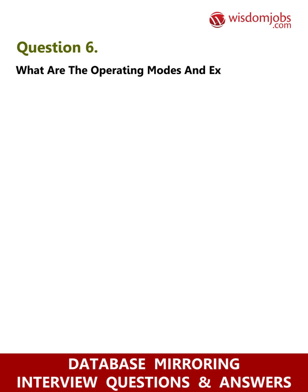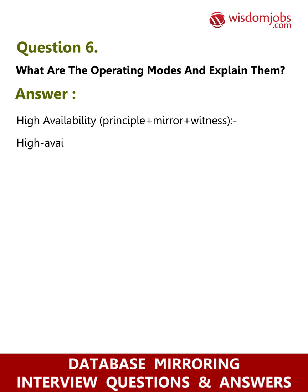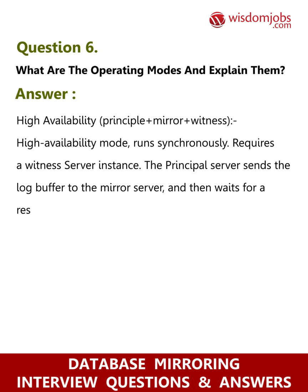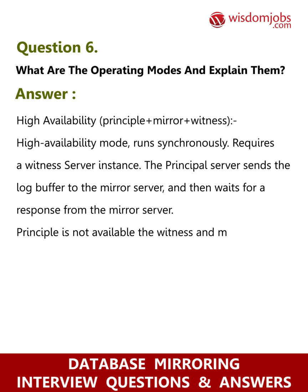Question 6: What are the operating modes and explain them? Answer: High Availability (principal + mirror + witness) runs synchronously and requires a witness server instance. The principal server sends the log buffer to the mirror server and waits for a response. If the principal is not available, the witness and mirror decide on automatic failover, and the mirror becomes online.